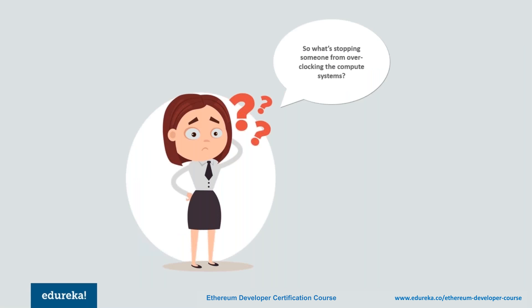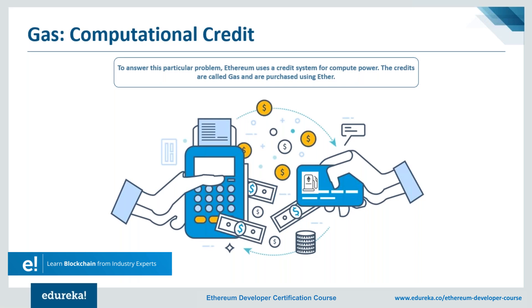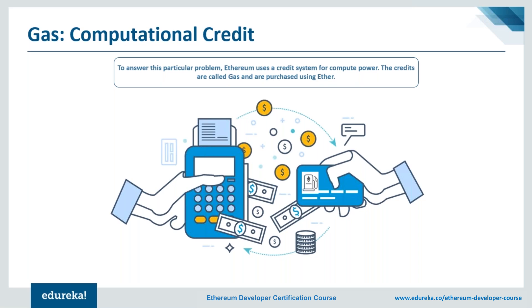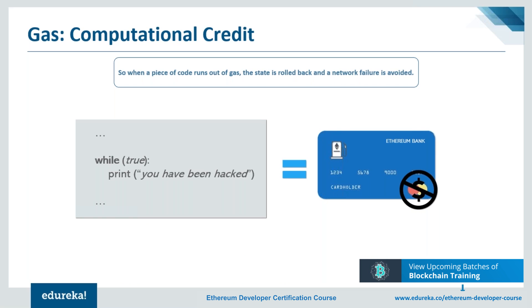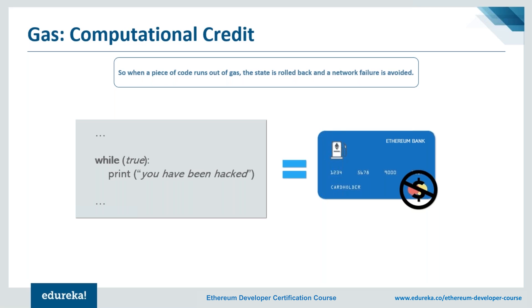One might try to overload the network by running a program that never stops executing. Ethereum tackles this by issuing computation credits called gas. The gas price per transaction or contract is set to deal with the Turing-complete nature of Ethereum and its EVM — the idea being to limit infinite loops. If there is not enough Ether in an account to perform a transaction, it is considered invalid. For example, if A wants to send B one Ether, the total cost would be 1.0001 Ether. If A wanted to form a contract depending on future Ether prices, more lines of code would execute and A would pay more gas — a neat system to keep computation overload in check.